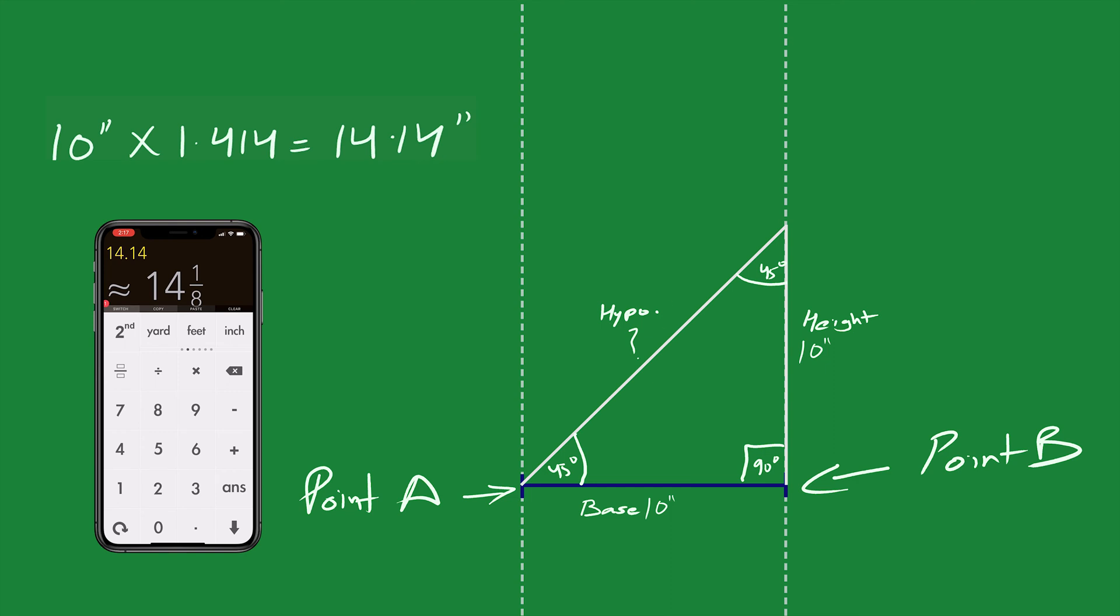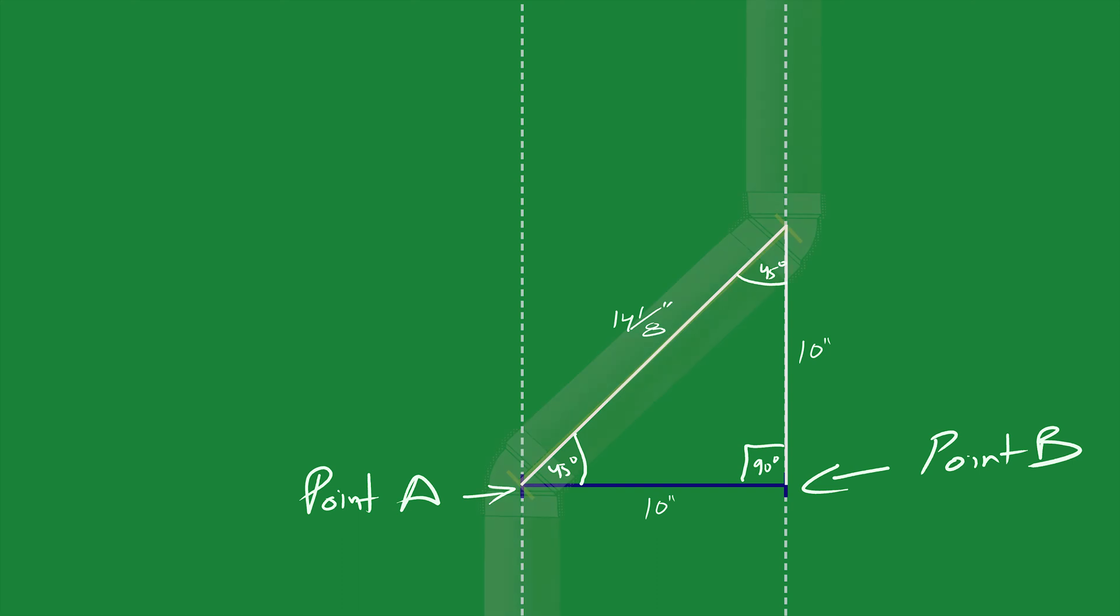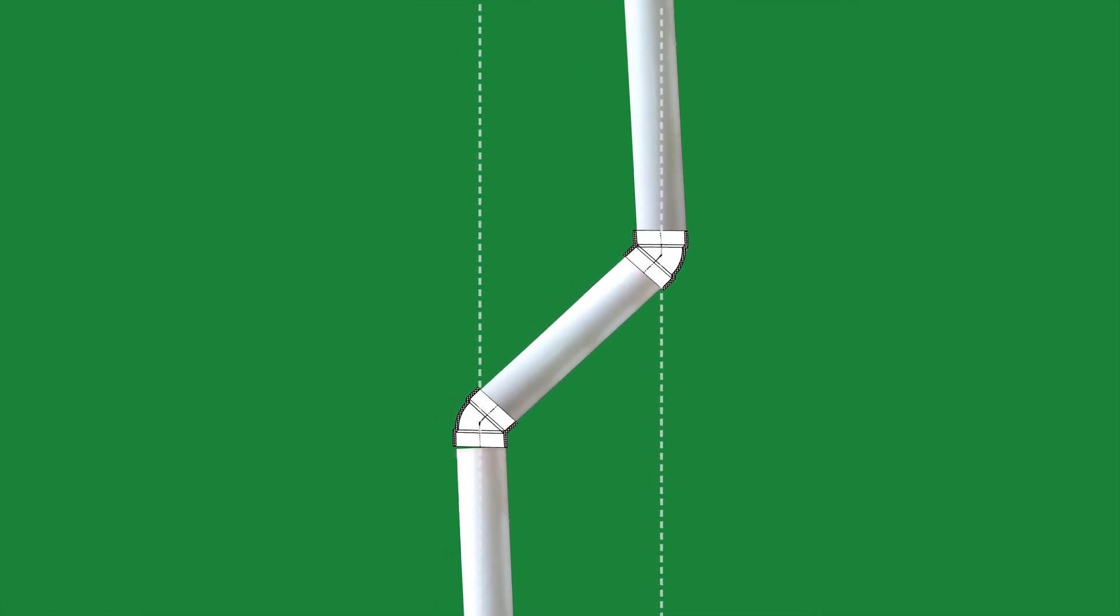That's our hypotenuse, meaning measurement from one center to another. If you use this measurement to cut the pipe, the length of the pipe will be too great and the offset will look like this.